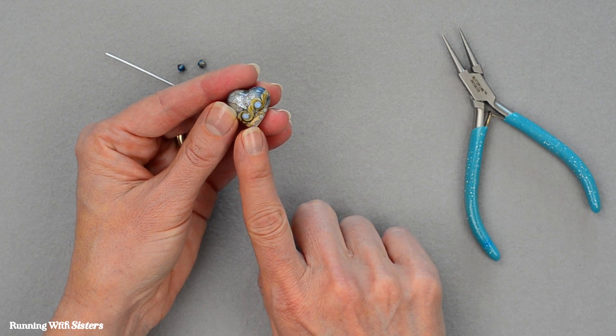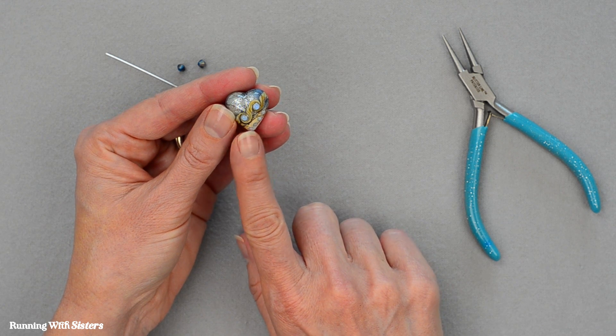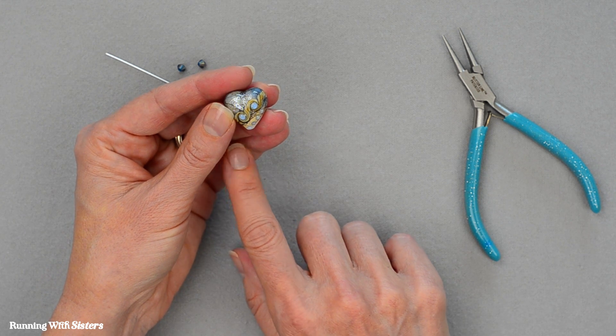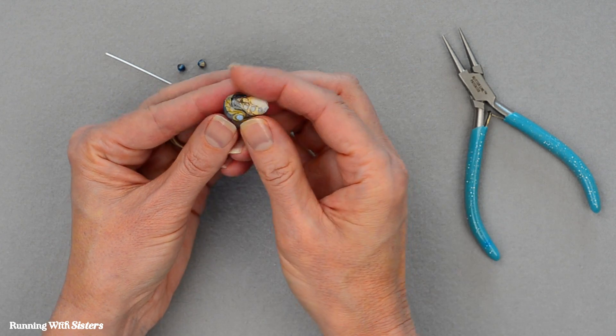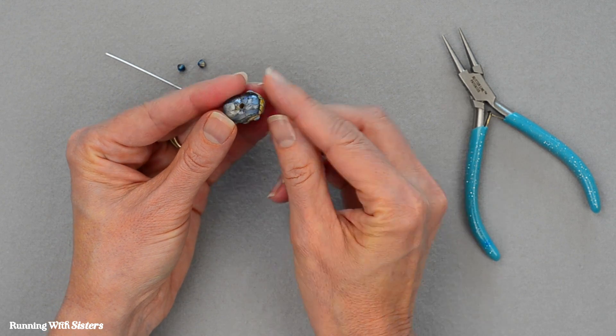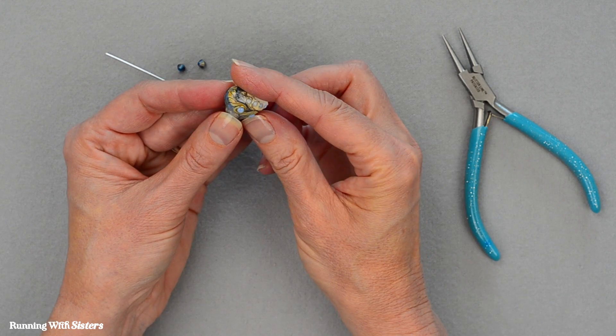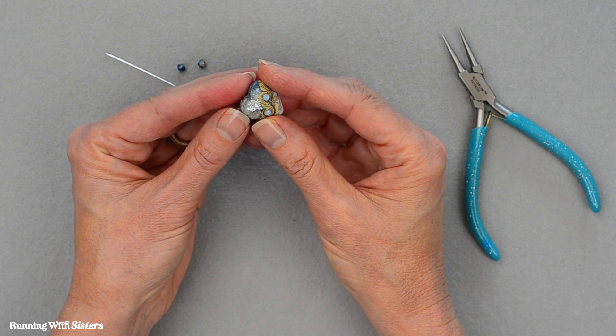We bought this beautiful lampwork bead at a bead show and thought we've just got to turn that into a pendant. But we realized right away that we can't just take the bead and slide it onto a cord because it would end up sideways. This bead is drilled top to bottom so it wouldn't sit right, it would be a sideways heart which would be very weird.